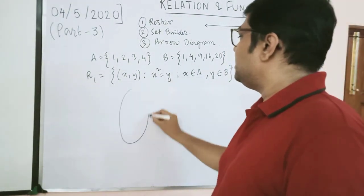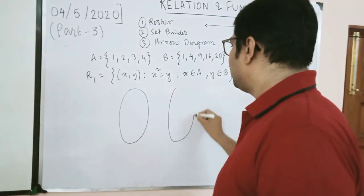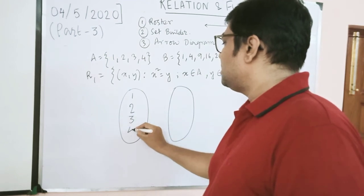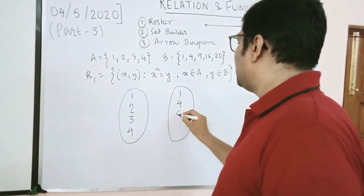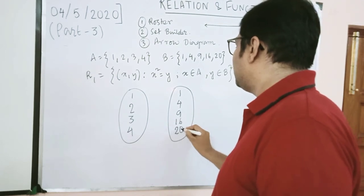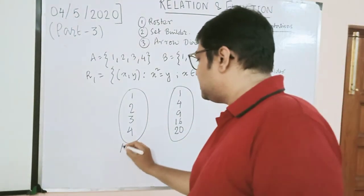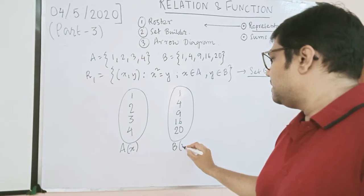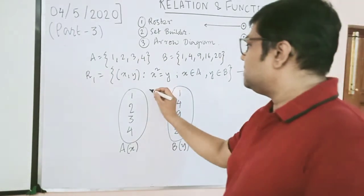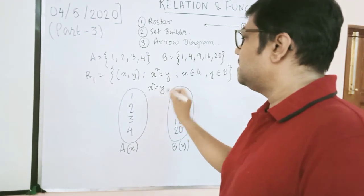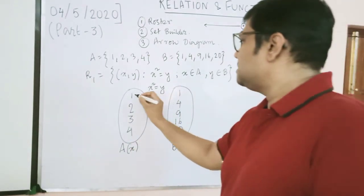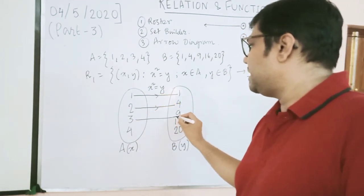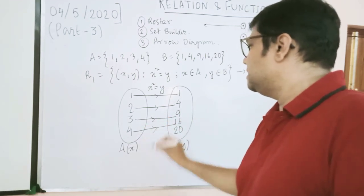Now we write the arrow diagram representation. On the left side we have A with elements 1, 2, 3, 4 and on the right side B with elements 1, 4, 9, 16, and 20. The condition is x² = y. So squaring x gives y: 1 maps to 1, 2² = 4, 3² = 9, and 4² = 16.